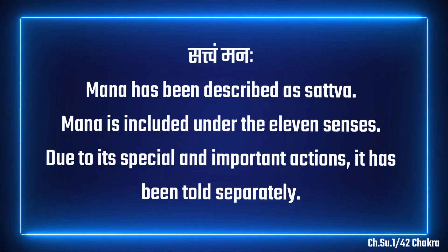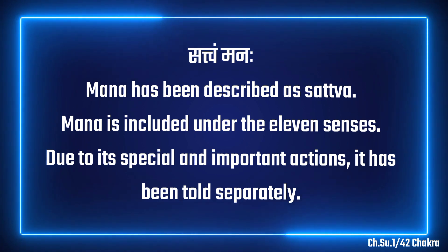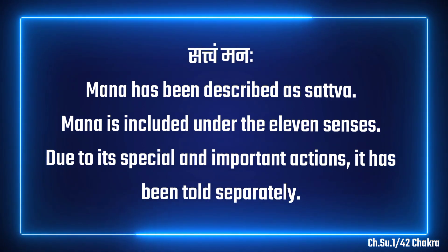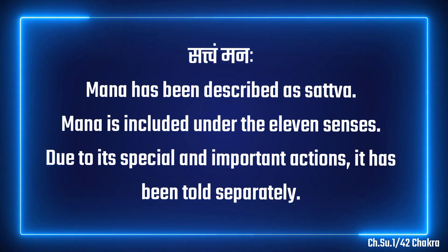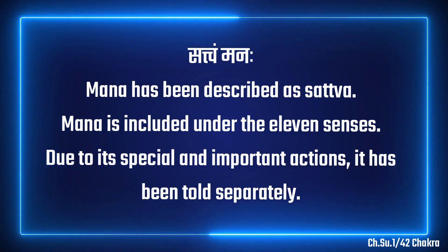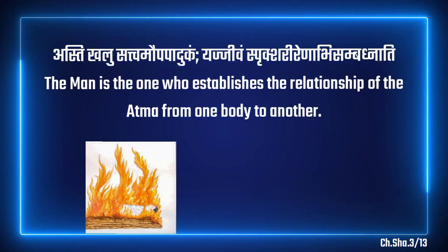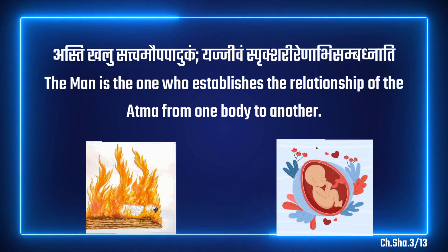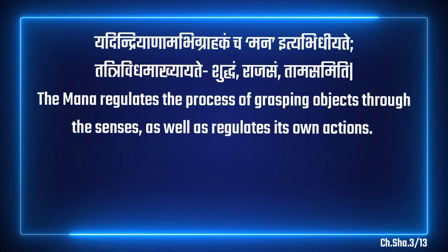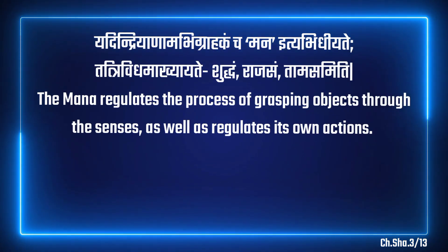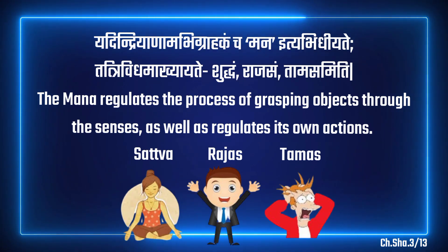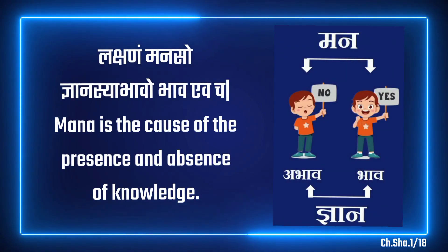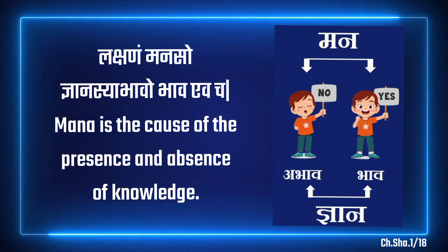In the context of the component of the body, the mind has been described as Sattva. Although the Man is included under the eleven senses, due to its special importance, the description of Man has also been told separately as a component of the body. The Man is the one who establishes the relationship between the Atma from one body to another. The Man regulates the process of grasping objects through the senses as well as regulates its own actions. The Man has been told to be of three types: Sattva, Raj and Tam. Man is the cause of presence and absence of knowledge.